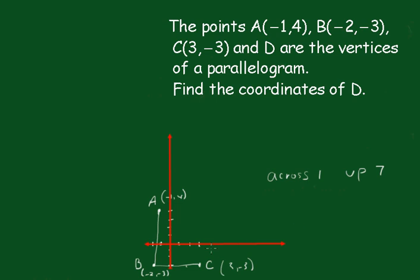So if I want to keep the line CD parallel, I'll have to do the same thing. I'll have to go across 1, which makes it to 4. So D's x-coordinate will be 4. We've got to go across 1 and up 7. So when we go up 7, we end up again at 4.